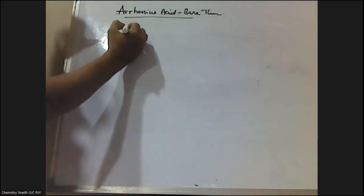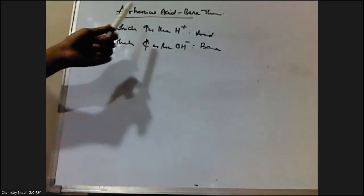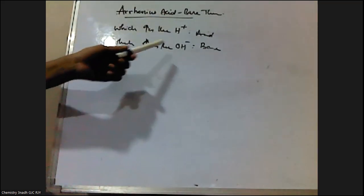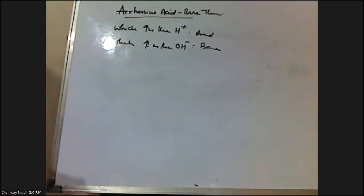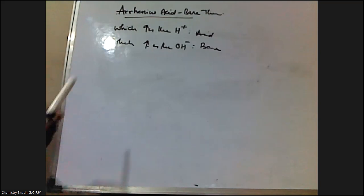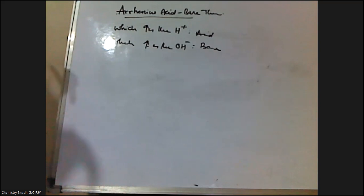According to the Arrhenius Acid Base Theory, the substance which increases the hydronium ion concentration is called an acid, and the substance which increases the hydroxyl ion concentration is called a base. But there are certain limitations in this theory. The main limitation is it is applicable only to aqueous solutions. It also failed to explain the basic nature of ammonia and the acidic nature of certain compounds like BF3 and AlCl3.